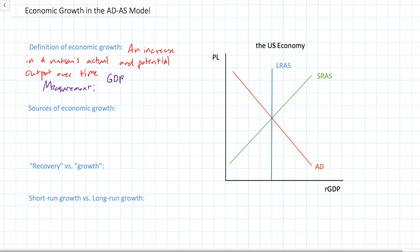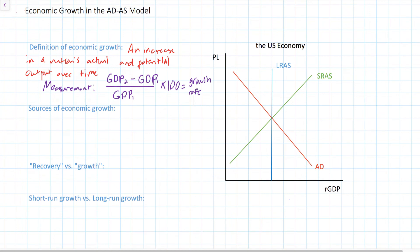The measurement of economic growth is the change in a country's GDP over time. We can put two different levels of GDP into a simple equation: GDP2 minus GDP1, multiplied by 100, to get what we call the growth rate. A country's GDP growth rate is the percentage by which its GDP increases between two periods of time. Economic growth is defined as an increase in a country's GDP over time, both its actual and its potential GDP.